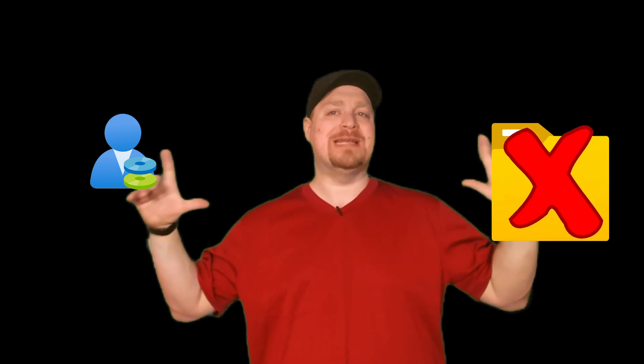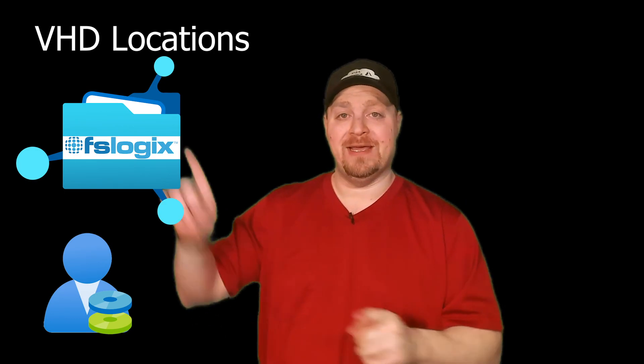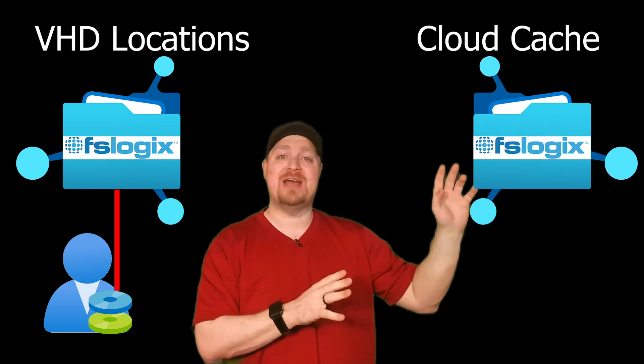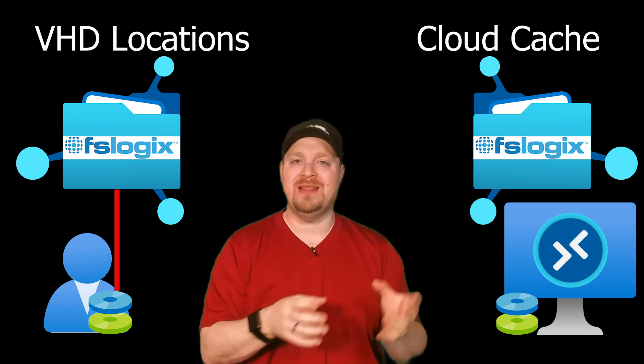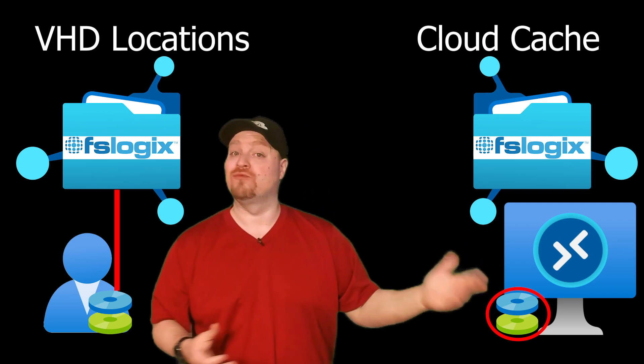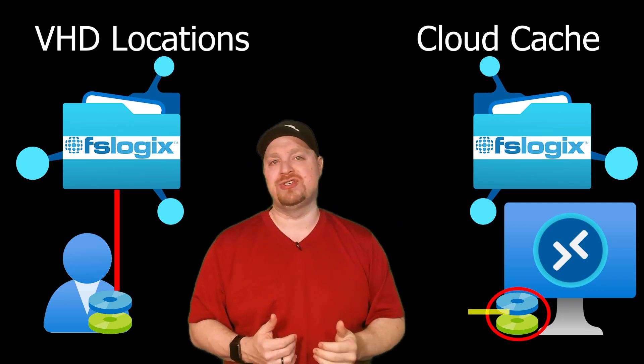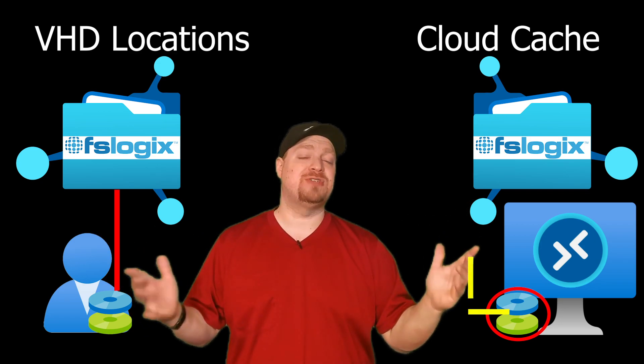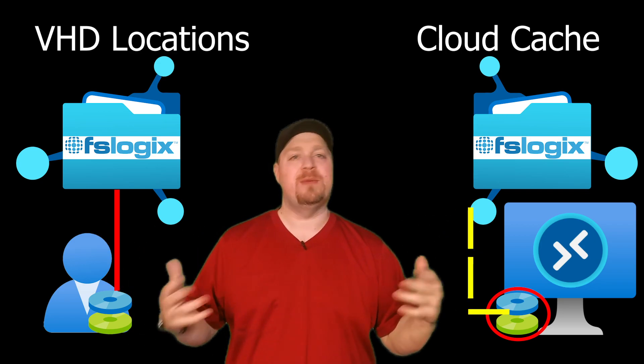Now that you understand the two different kinds of profiles, let's talk about attaching them to your WVD systems. This happens in two different ways. The first is called VHD locations — when you read or write data to your profile, you communicate directly with the file share. Cloud Cache works differently: it creates a hidden space on the C drive and performs all writes locally, then replicates out to the file share. Both options allow you to write to multiple shares for some measure of redundancy.